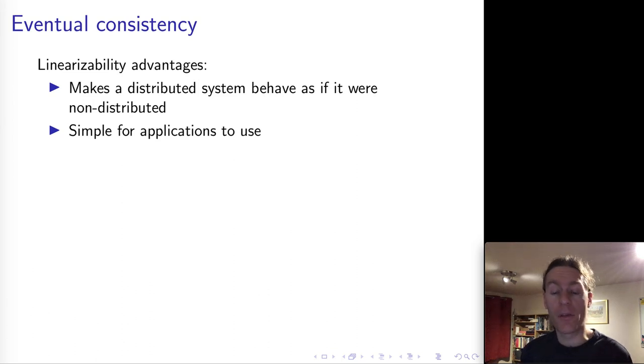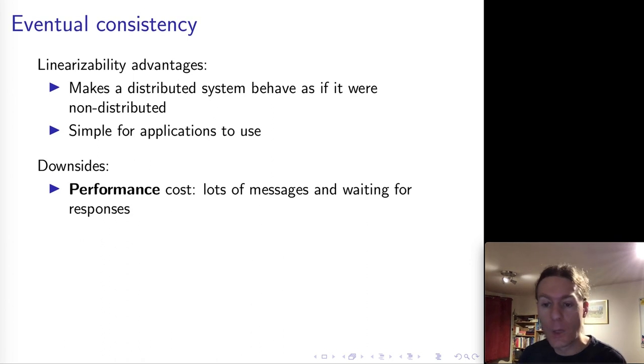We've talked about linearizability as one possible consistency model for distributed systems, which is a very strong consistency model. It has the very appealing property that it makes a replicated system look as if it were not replicated, with only a single copy of the data and atomic operations, making linearizability very easy to use. Unfortunately, it comes at a price as well.